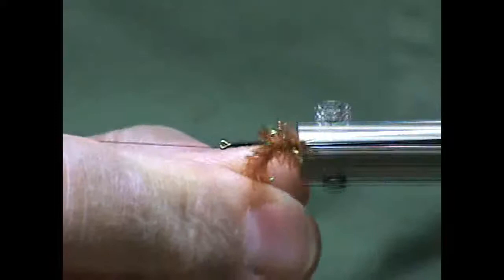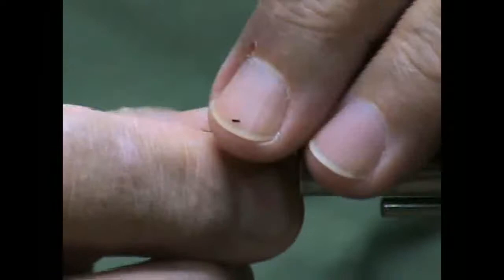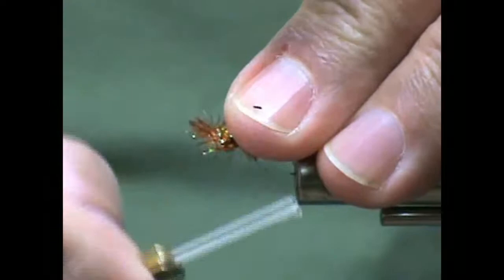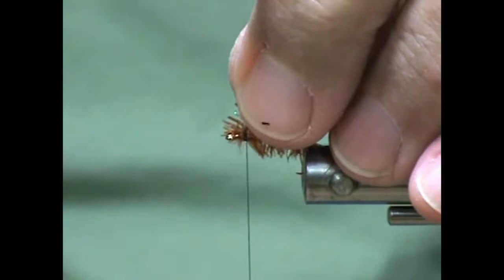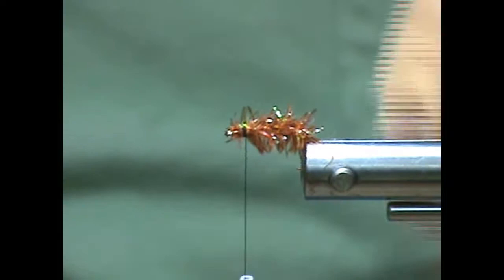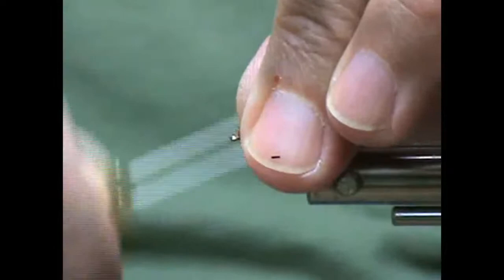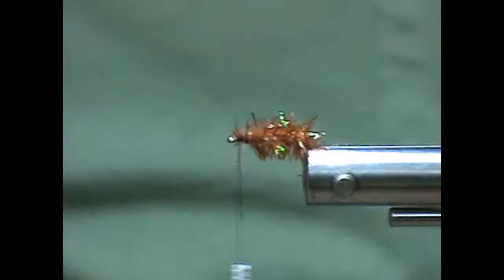And now I'm going to wrap this counter clockwise back up. Take my thread and I'm just going to go ahead and put a couple wraps in. Tie that off. And I'm going to reach in and cut off the excess and put in a couple wraps in front. I want to make sure we keep that eye to the hook open.